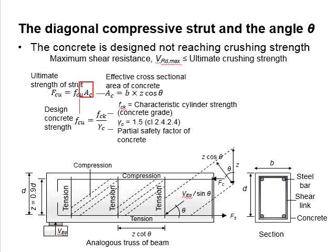As for the effective cross-sectional area of the strut, it is determined by B multiplied by Z cos theta. The theta represents the angle of the strut, and Z cos theta is referring to this width. This is calculated on the basis of the effective height Z between the top and bottom reinforcement bar.